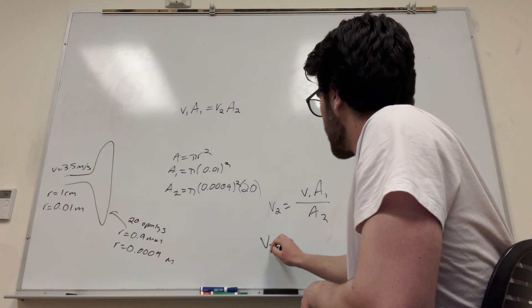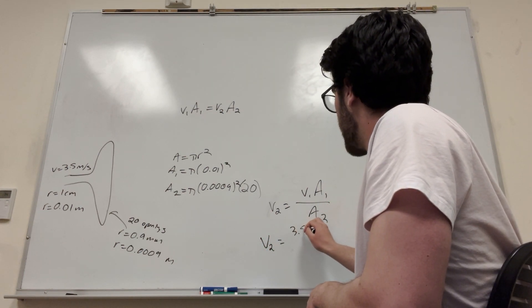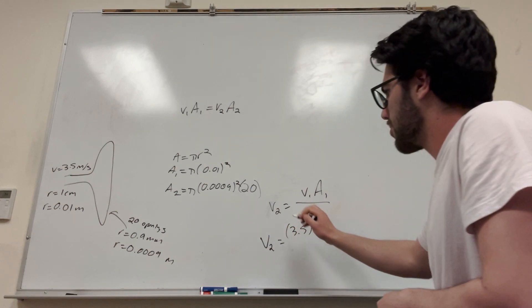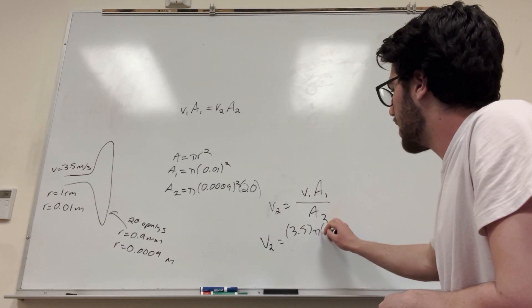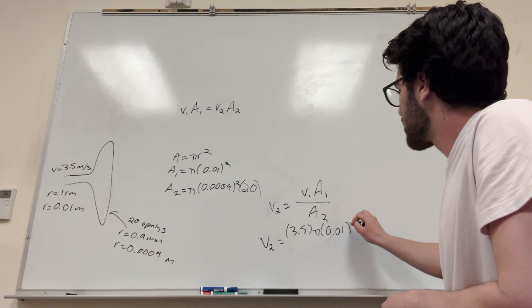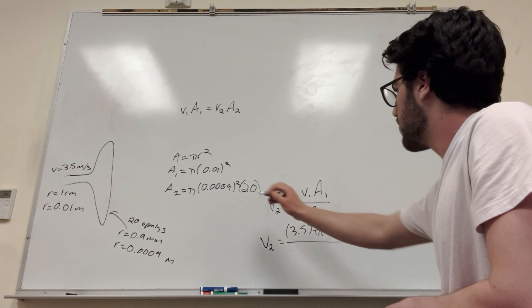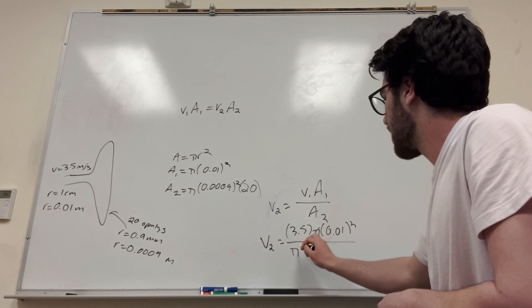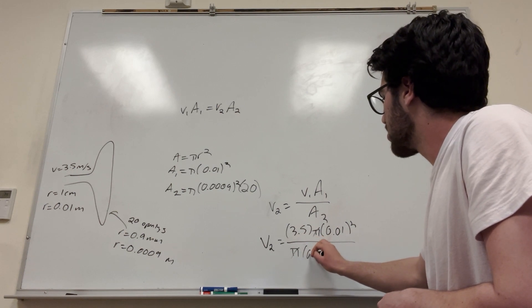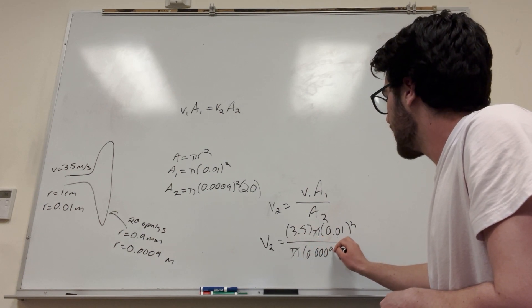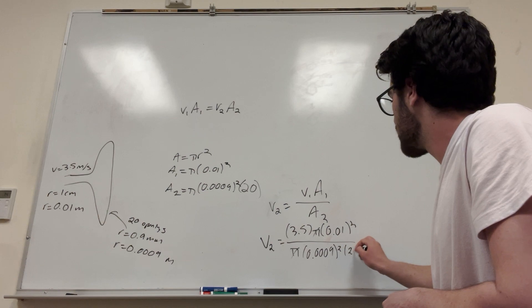Plugging in what we know, velocity 2 is equal to 3.5. So the pi's are going to cancel, but we can write them out. So pi 0.01 squared over pi. So the pi's are going to cancel.